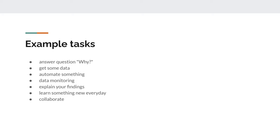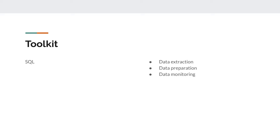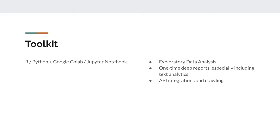For my toolkit, I start with SQL because all the data I need is in our database. I use it for data extraction, data preparation, and data monitoring — it's my first window. Then when I have the data, I use R or Python plus Google Colab or Jupyter Notebook to prepare it. These are very good tools for presenting findings and collaborating with colleagues.